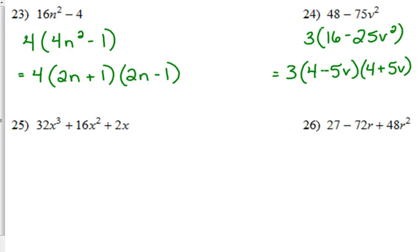Almost there. 25. We've got a little bit more going on here. 32, 16, and 2. They have a GCF of 2. But what is up with that x cubed? We've got x cubed, x squared, and x. So let's take out an x. They all have an x. When we take out an x, we've got 16x squared plus 8x plus... What's our last term? 1. Plus 1.